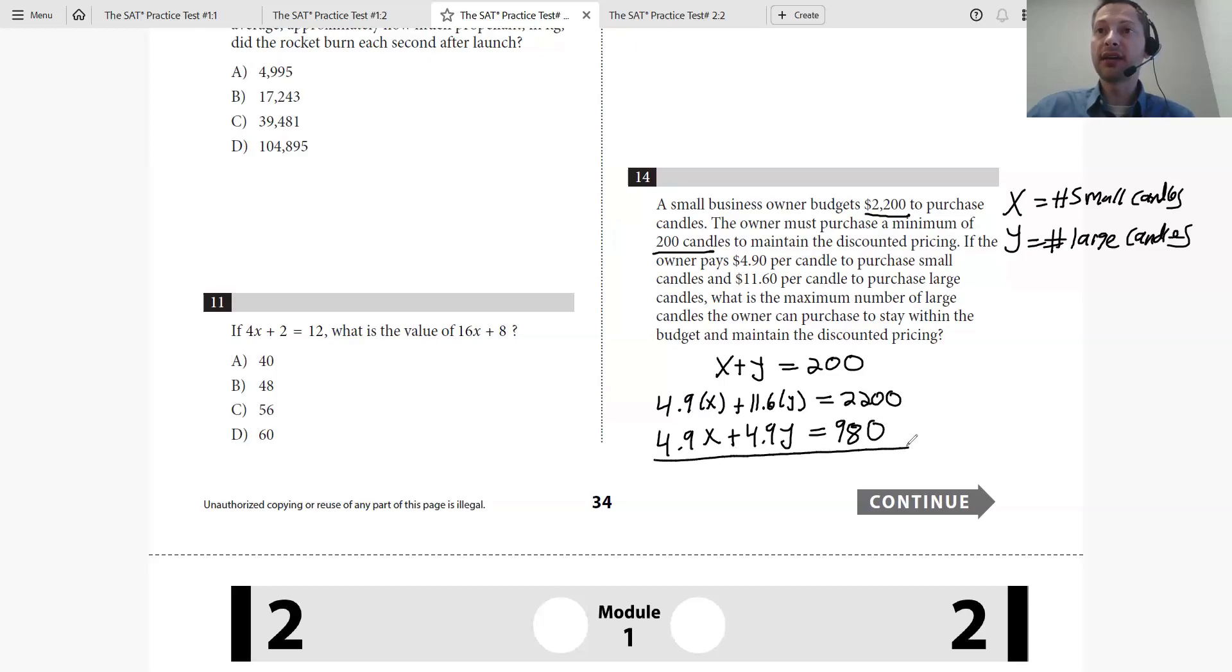Then you just subtract the two and that eliminates the X. That's why it's called elimination. 11.6 minus 4.9 is 6.7. 6.7Y, just use your calculator, equals 1220. 2200 minus 980 is 1220.